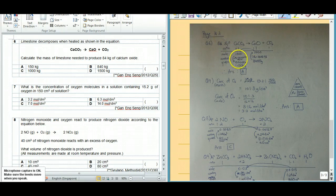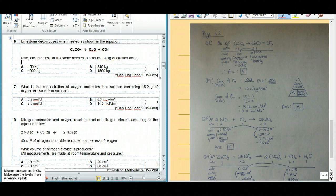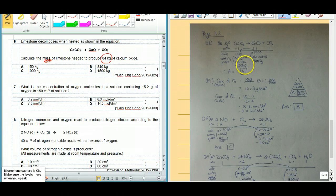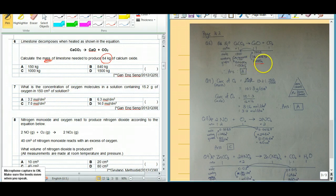So the template here is given. So first up, what is given to you, they want you to find out what is the mass of limestone needed to produce 84 kg of calcium oxide. So under the given, I'll write in 84,000 grams, because your units for calculation will be in grams.